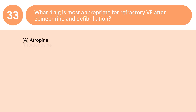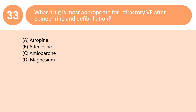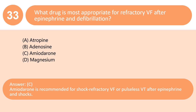What drug is most appropriate for refractory VF after epinephrine and defibrillation? A. Atropine. B. Adenosine. C. Amiodarone. D. Magnesium. Answer: C. Amiodarone is recommended for shock-refractory VF or pulseless VT after epinephrine and shocks.